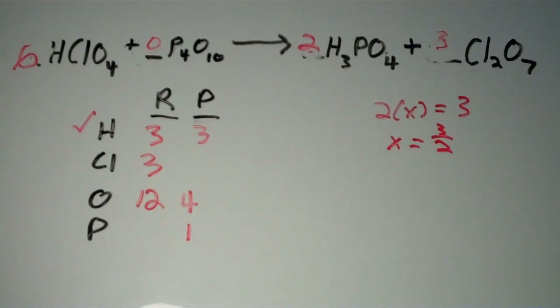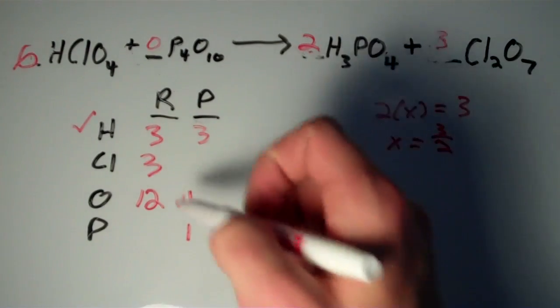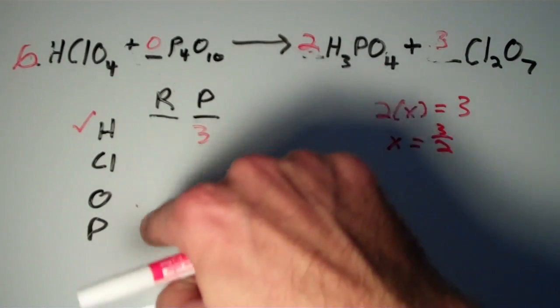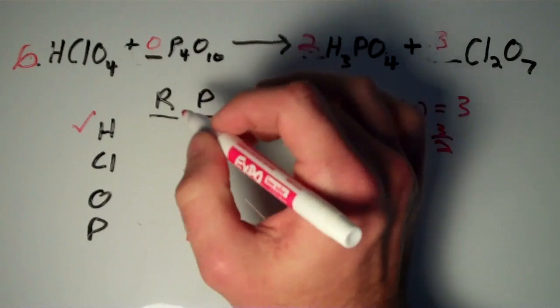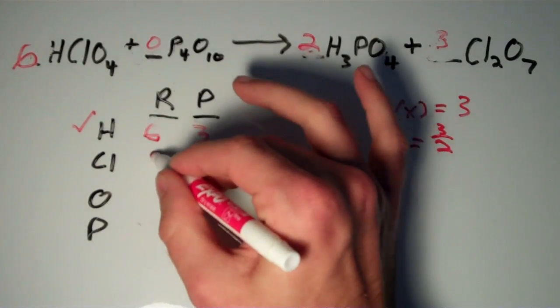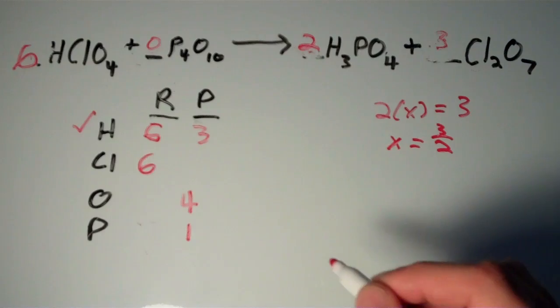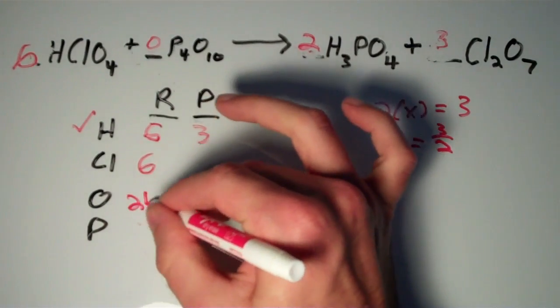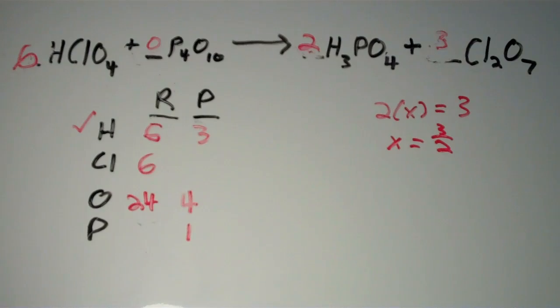We're almost finished. Now we've just changed all these numbers around. So if you want we can calculate them real quick. So let's first look at the reactant side. Looks like we have six hydrogens. We have six chlorines. We have 24 oxygens. Six times four is 24. And we don't have any phosphorus just yet.